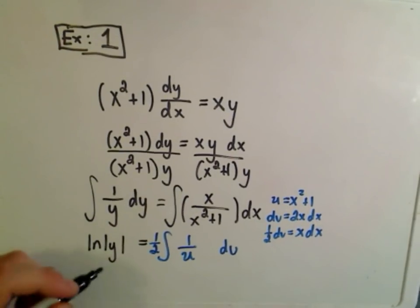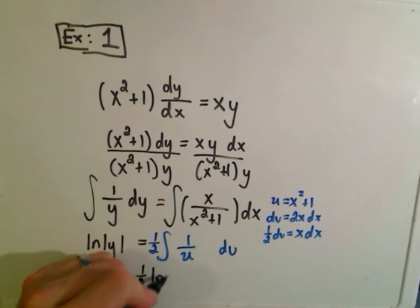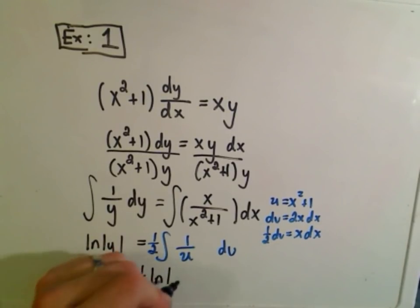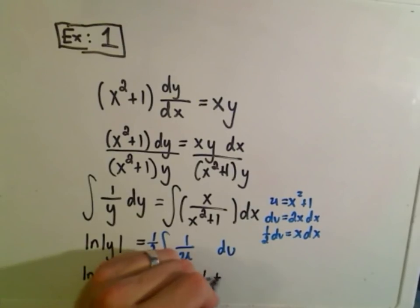So when I integrate both sides, again, on the left I already have the natural logarithm of y. I'm done with that. On the right, I'll get 1 half the natural logarithm of u. But remember, u is x squared plus 1 plus c.